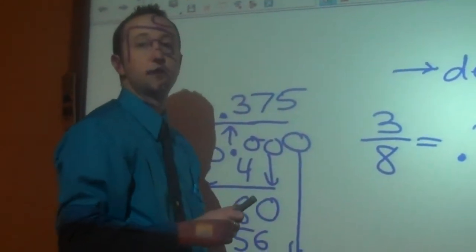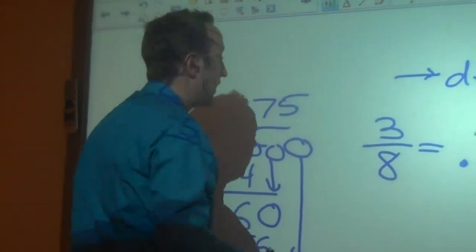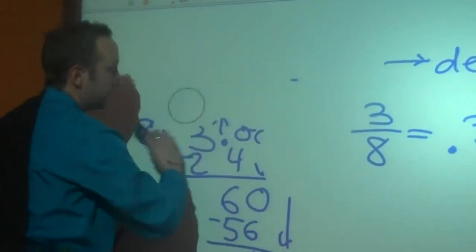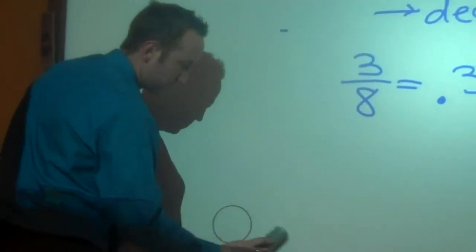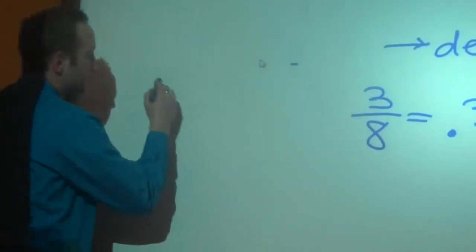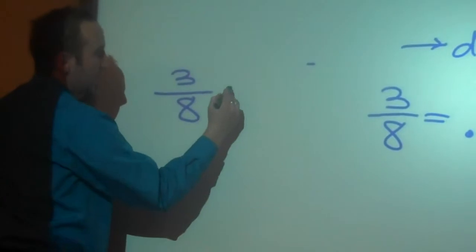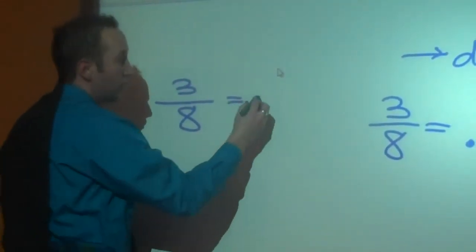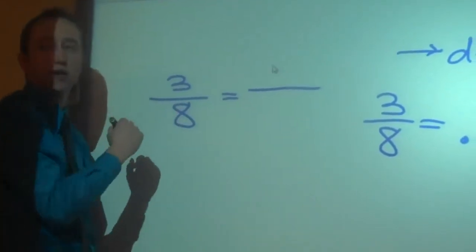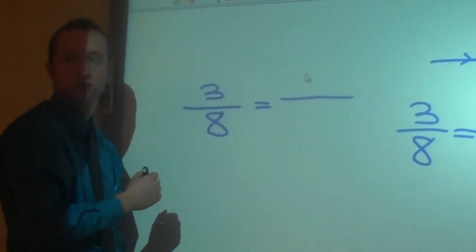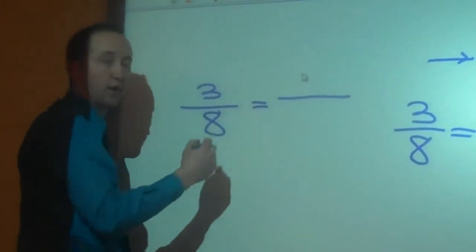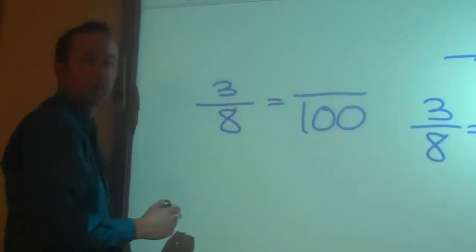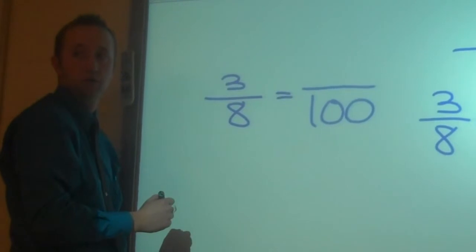Now we have to turn this into a percentage. In order to turn any fraction into a percentage, it's actually fairly simple. You take three-eighths and you're going to set that equal to a percentage. Now, Will, what's the best you can get on a percent, on a test? A hundred. A hundred. So does that go on the top or the bottom? Bottom. So that's going to go on the bottom. And then what goes on top?